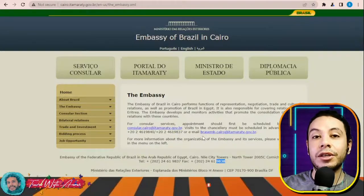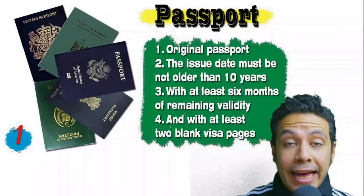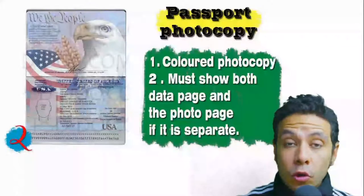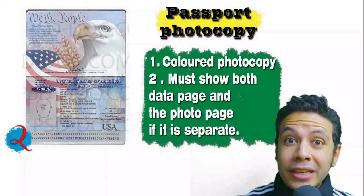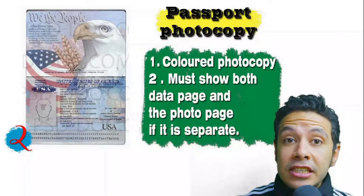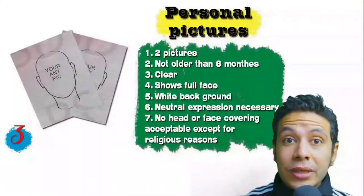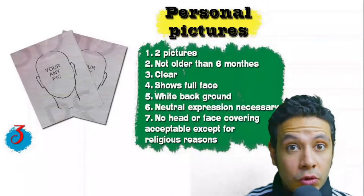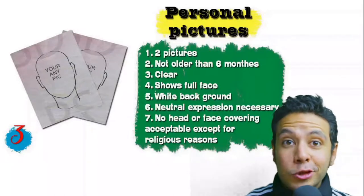After preparing all your documents, contact the embassy by phone or email to book an appointment and go to submit your documents. Regarding required documents: your passport must be original, not older than 10 years, with at least six months of remaining validity and at least two blank visa pages. You may also need one or more colored photocopies showing both the data page and photo page. For personal pictures, you will need at least two — they must be new, not older than six months, clear, showing your full face, preferably with a white background and a neutral expression. No head or face covering is acceptable except for religious reasons.